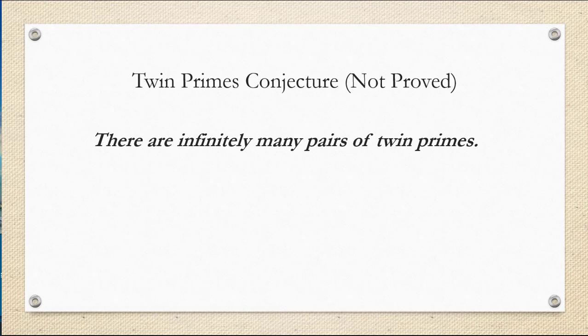Now twin primes have some mystery about them. The twin primes conjecture, which has never been proved, is that there are infinitely many pairs of twin primes. What has been proved is that there are infinitely many primes, but we're not sure if there are infinitely many twin primes, but we just think it's very likely.